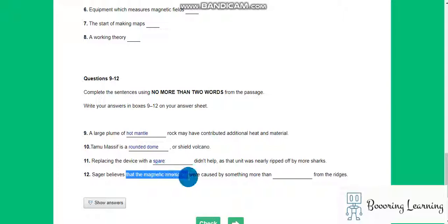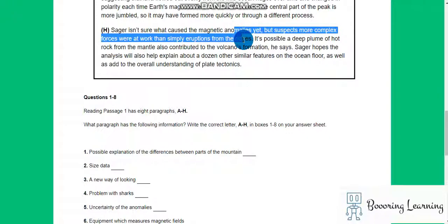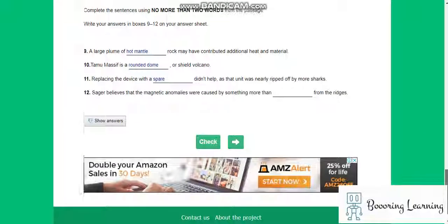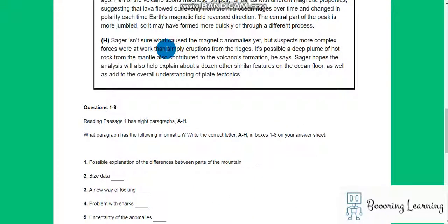Sager believes that the magnetic anomalies were caused by something more than. More than, it is H. Complex forces, simple eruptions.